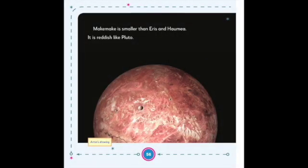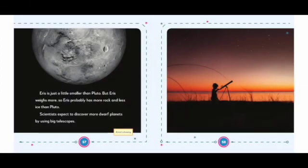Makemake is smaller than Eris and Haumea. It is reddish like Pluto. Eris is just a little smaller than Pluto, but Eris weighs more, so Eris probably has more rock and less ice than Pluto. Scientists expect to discover more dwarf planets by using big telescopes.